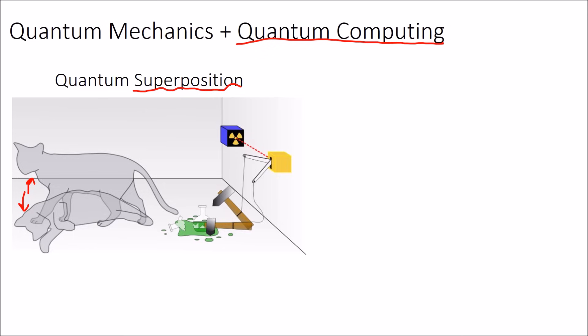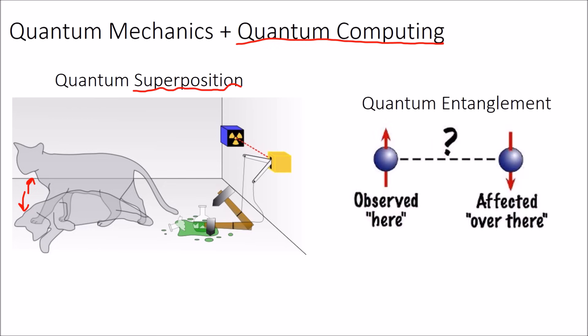And so another idea in quantum mechanics is the idea of quantum entanglement. This is the idea that two particles can become entangled. And even if you separate them by hundreds of kilometers, they can still influence each other in strange ways because they're connected using this strange quantum entanglement property. So again, what do these terms even mean? What's quantum superposition and what's quantum entanglement? What do these mean mathematically?